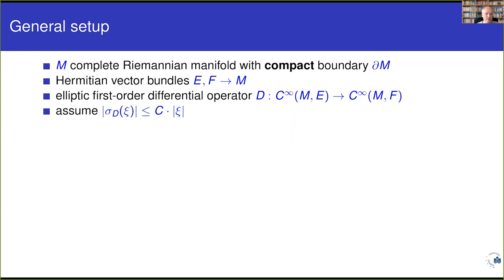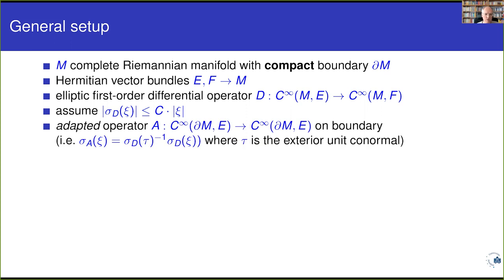On the boundary we need an adapted operator A mapping sections of E to E. The adaptedness means the principal symbol of A can be expressed in terms of the principal symbol of D: it equals the principal symbol of D with the unit conormal inserted, composed with its inverse. This is why A maps E to E, whereas D maps E to F. That's the compatibility condition between the interior operator D and the boundary operator A.